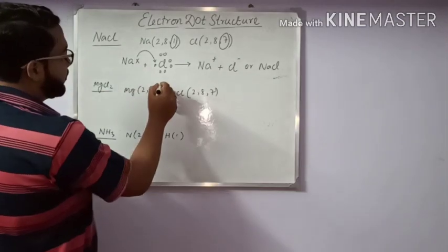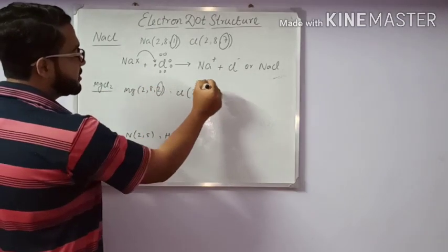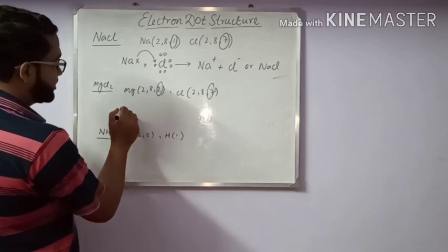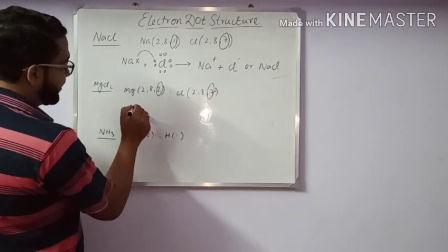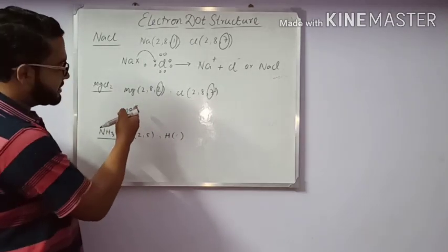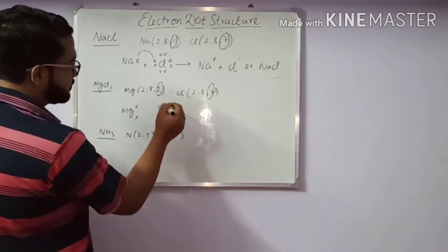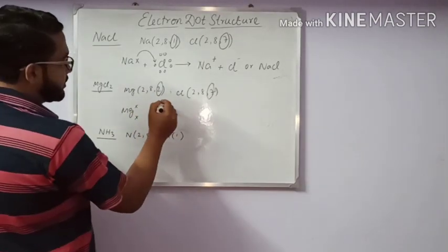Next, magnesium chloride. Valence electron is 2, here is also 7. So magnesium - the valence electrons are denoted by this symbol X and chlorine atom.